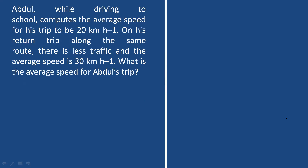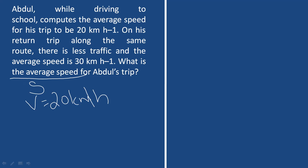Let's solve this. Let the distance to school be S. When going to school, the average speed is 20 km per hour. Time T1 equals distance divided by speed, which is S divided by 20. When returning, the distance is the same S, and the speed is 30 km per hour, so time T2 equals S divided by 30.